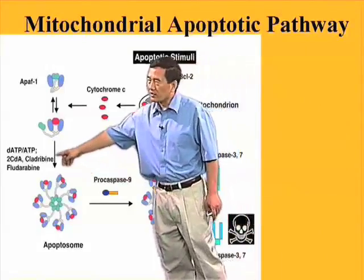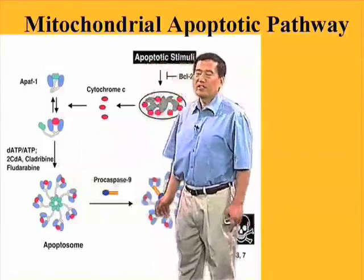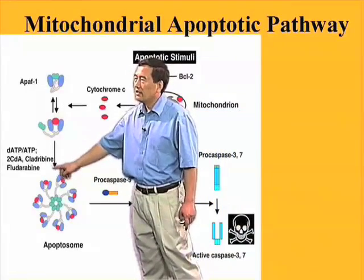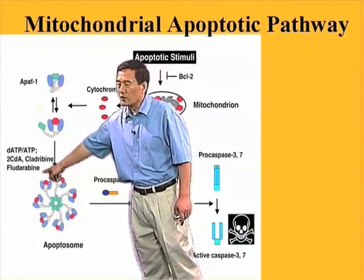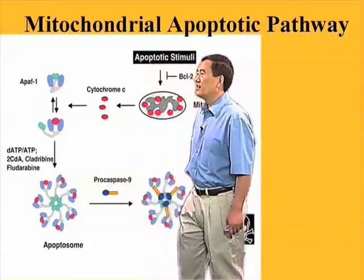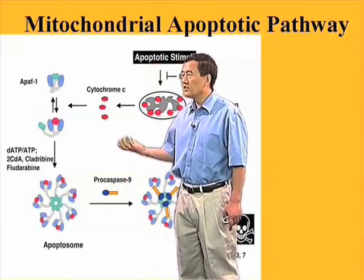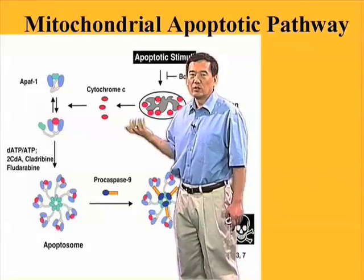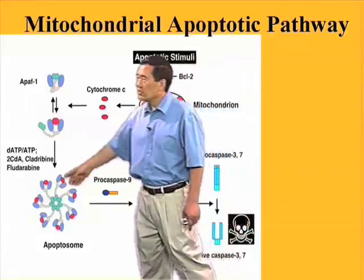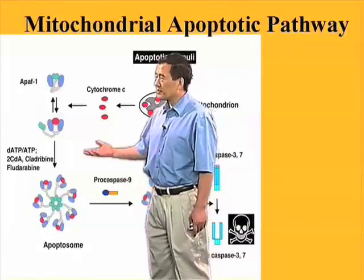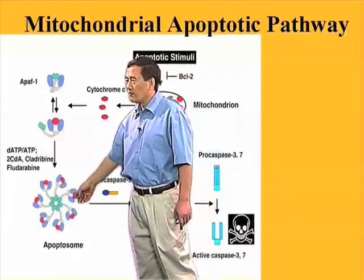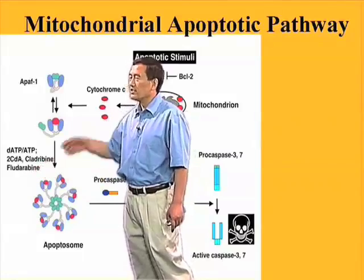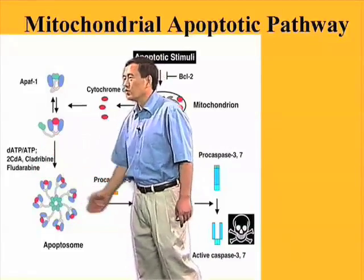Some deoxynucleotide analogues, such as 2-CDA (also called cladribine) and another called fludarabine, are actually clinically used drugs that treat leukemia. These nucleotide analogues can substitute dATP to drive the formation of the apoptosome. In certain cases, for example, fludarabine is even more effective than dATP at causing apoptosome formation.